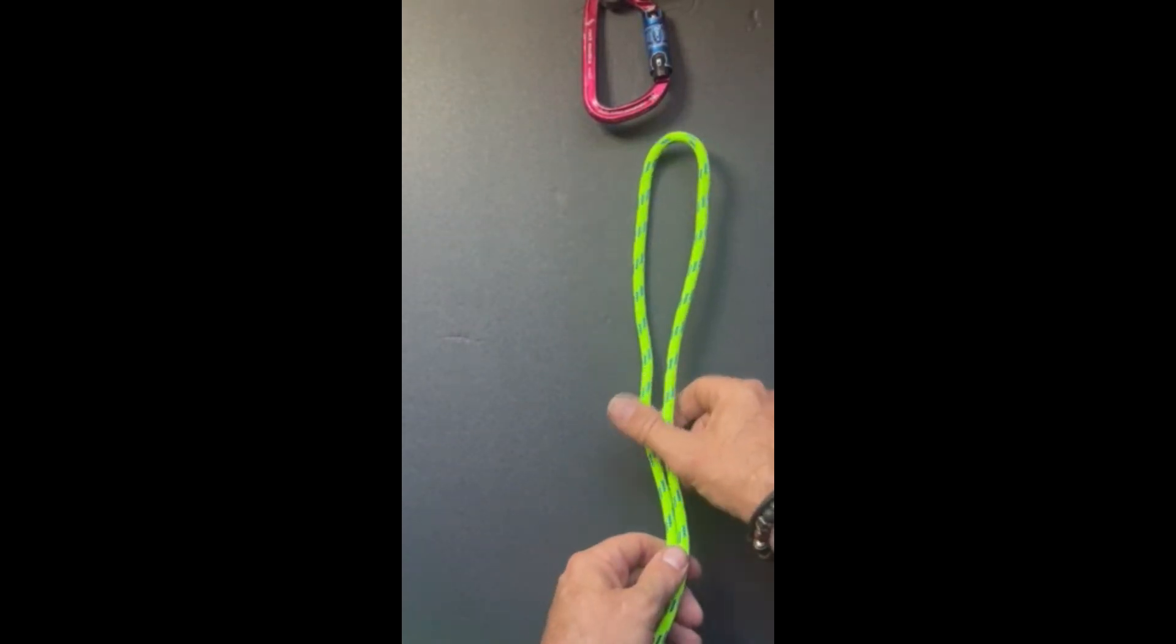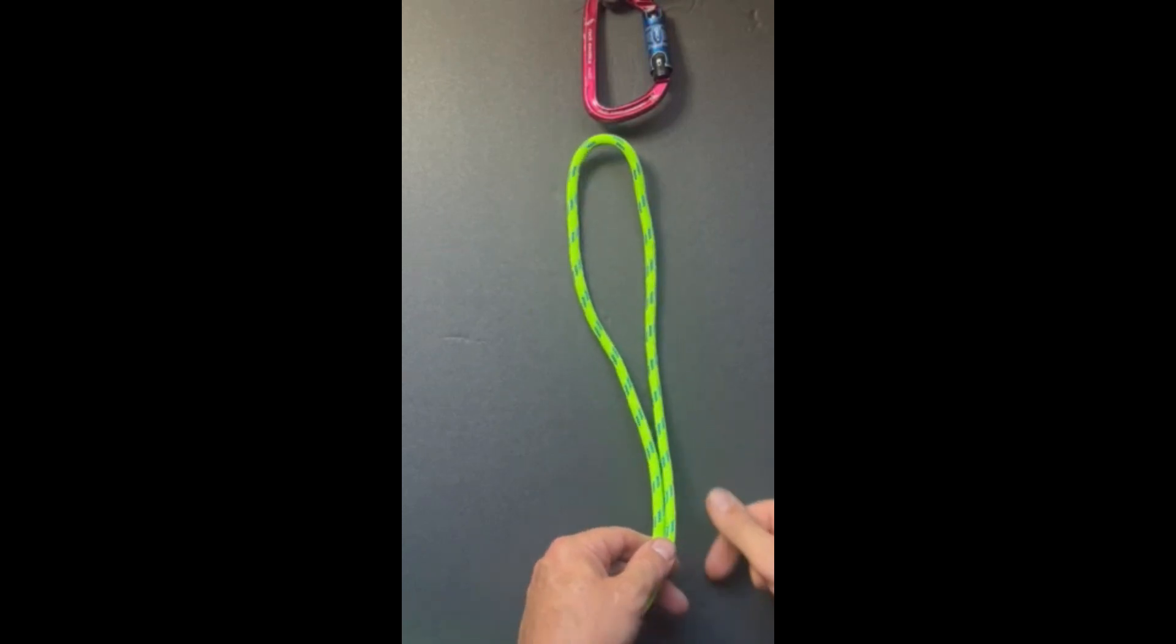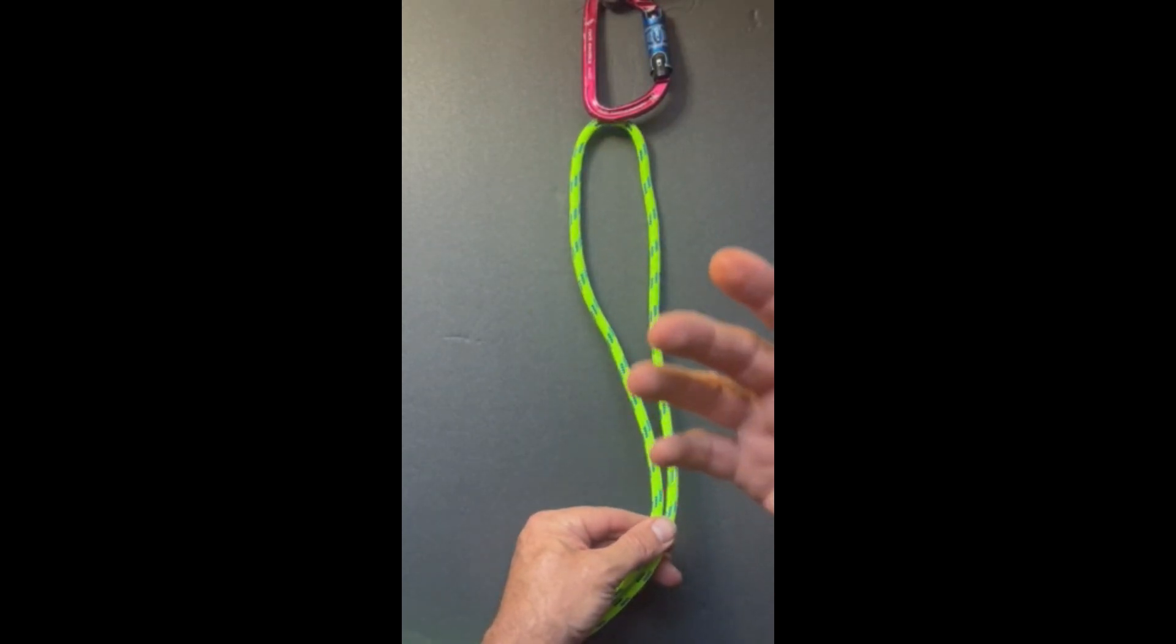This is a macrame knot. It's an easy knot to untie after it's been loaded. It's also a good way to get your ropes back if you're rappelling over a hillside or down in a ravine and you need those ropes back when you get to the bottom. It's an easy way to untie your ropes.